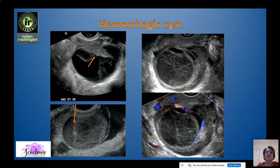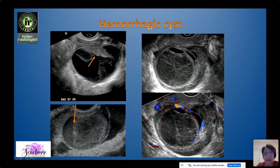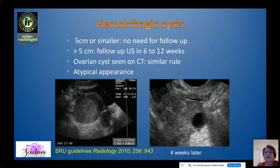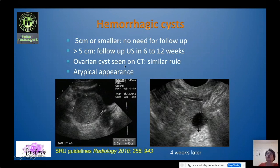The next very common adnexal mass is a hemorrhagic cyst. If you see a retracting clot with its acute angles, or a lace-like or fishnet appearance, the lesion will be avascular — just a blood clot with maybe some flow at the edge — and sometimes there is a fluid-fluid level. These are straightforward diagnoses. If they are five centimeters or smaller, no follow-up is needed. If larger, follow-up in six to twelve weeks to confirm resolution. The same rule applies if you see an ovarian cyst on CT in a young woman; you don't necessarily need ultrasound follow-up.